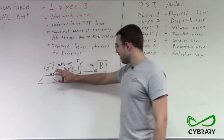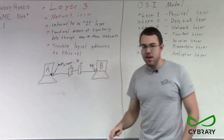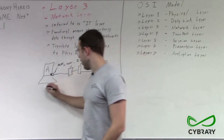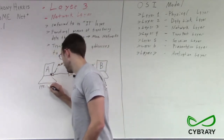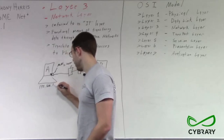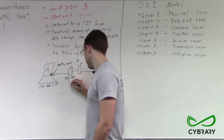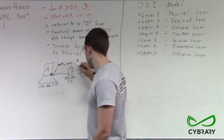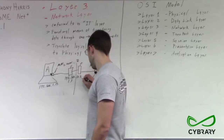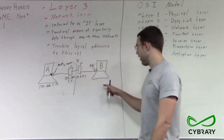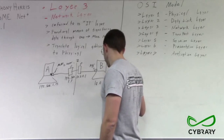Now we need to add our layer 3. We can't just use the data link layer and send layer 2 from MAC address to MAC address. Our layer 3 network layer gives IP addresses to each device: computer A is 192.168.1.15, the network A router is 192.168.1.1, the network B router is 10.0.0.1, and computer B is 10.0.0.17.